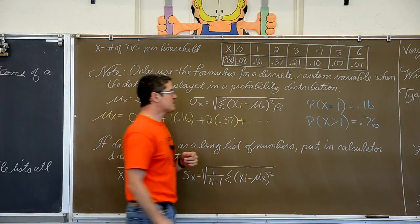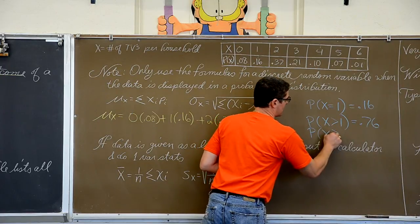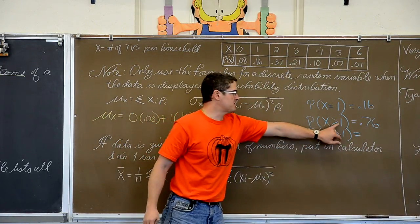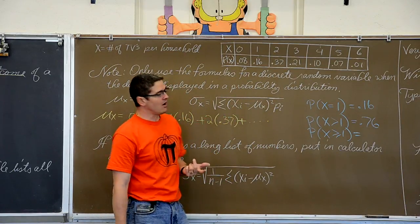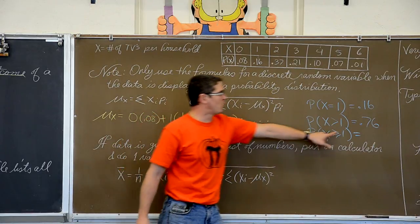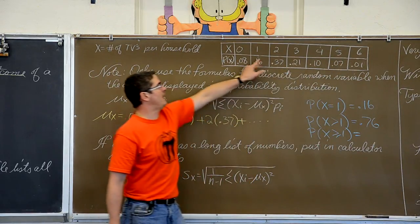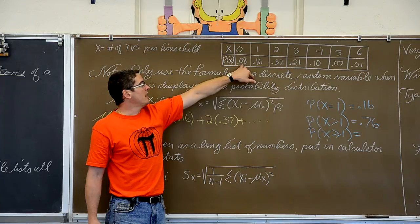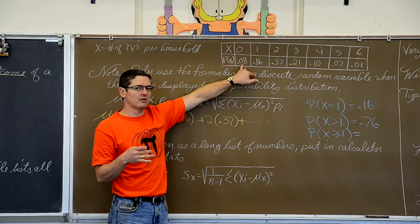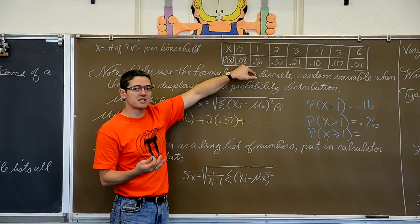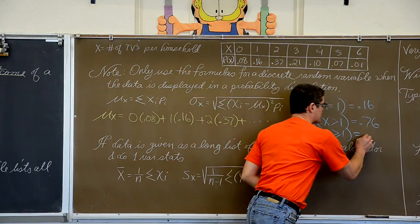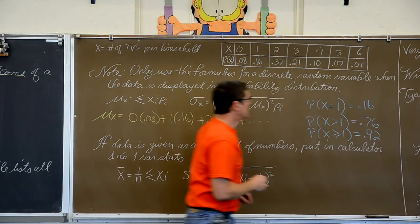So the probability based on this made up data that a household has more than one TV is 76%. What is the probability that a household has one or more TVs? When I bring in this equal sign and ask for the probability, well that is going to be the complement, the probability of one or more is the complement of having no TVs. And having no TVs is 8% of the population, so the probability of having one or more is 92%.